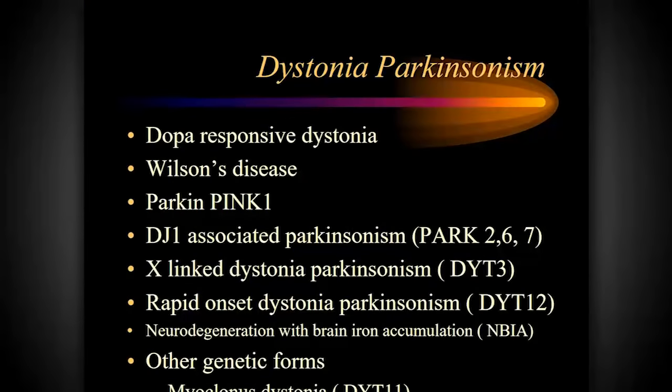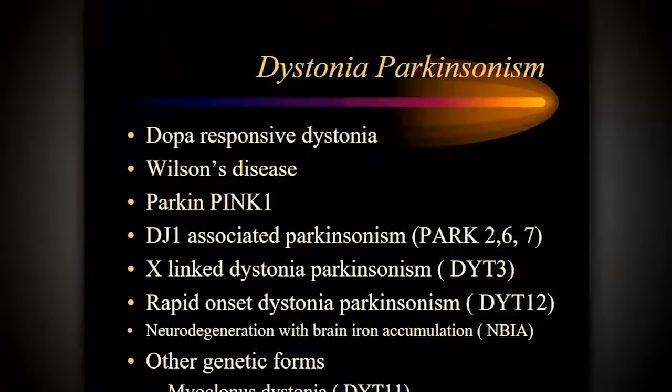Other types of dystonia have a combination of dystonic and Parkinsonian symptoms. At the top of the list is DOPA-responsive dystonia. There are other dystonic conditions that include Parkinsonian symptoms as part of the presentation — this doesn't mean the person has both Parkinson's disease and dystonia, but rather that they have symptoms of both. There are several genetic mutations associated with Parkinsonian symptoms within the spectrum.